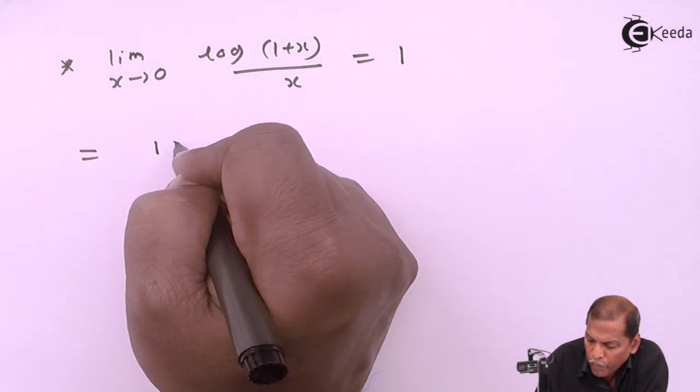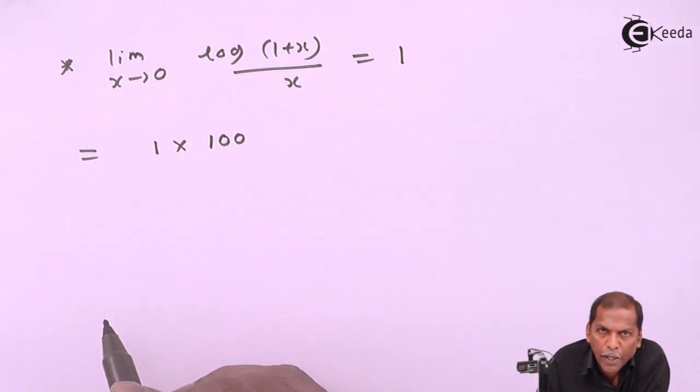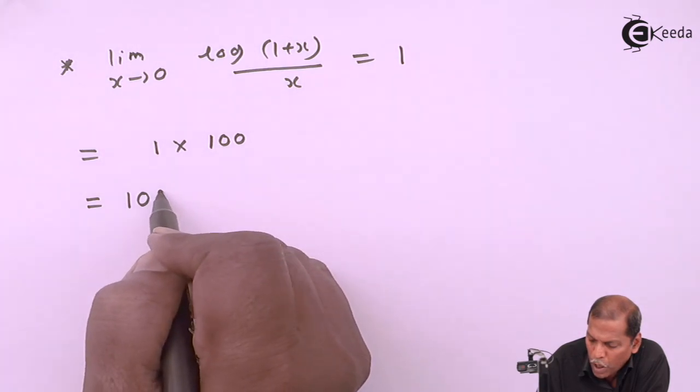Outside the bracket we have the number 100, so 1 multiplied by 100 equals 100.